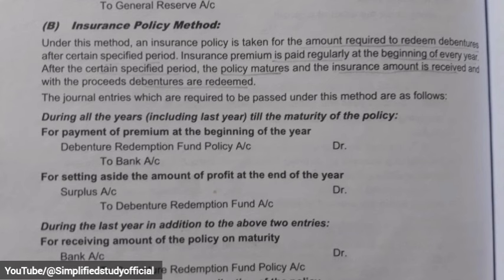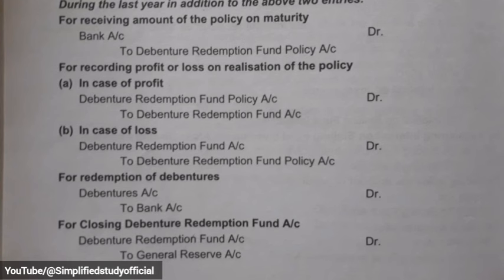During the last year, when the policy matures and the money is received, the entry is: Bank Account debit to Debenture Redemption Fund Policy Account. For profit or loss on realization of the policy, the entry is: Debenture Redemption Fund Policy Account debit to Debenture Redemption Fund Account (for profit). To redeem the debentures: Debenture Account debit to Bank Account. To close the Debenture Redemption Fund: Debenture Redemption Fund Account debit to General Reserve Account.